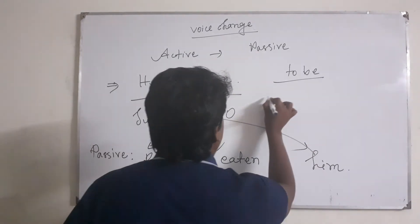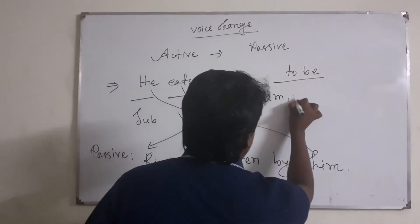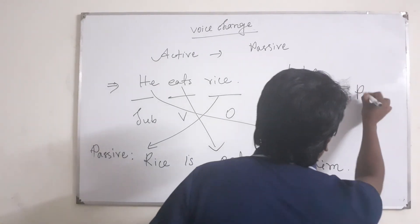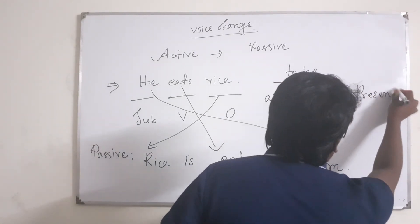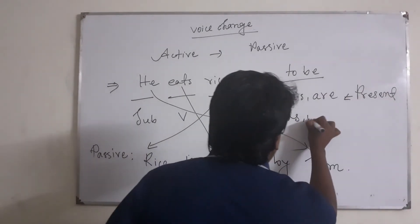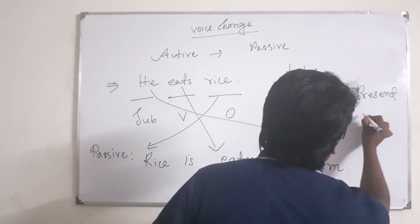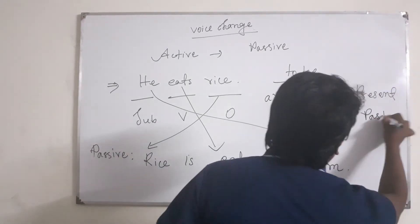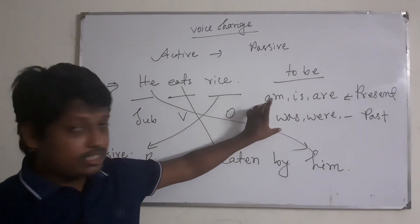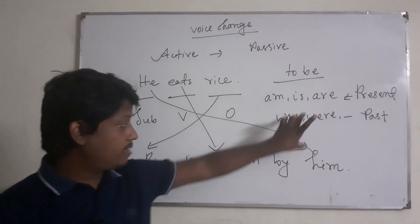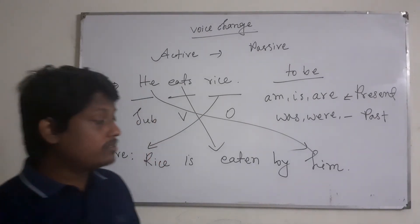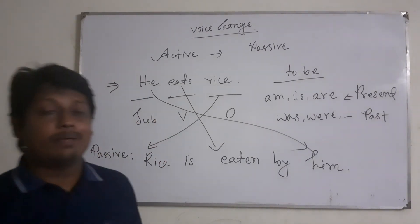It is present in present tense. Was, were for past tense. Example: I know the man. The man is known to me.